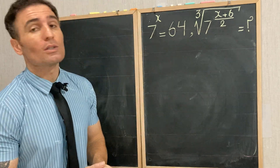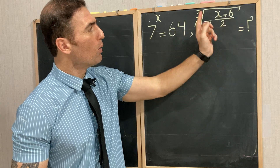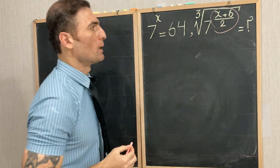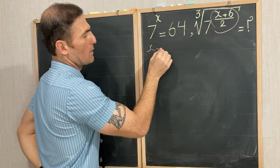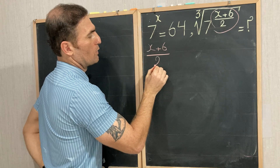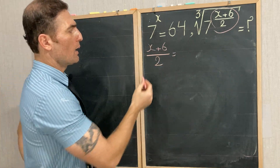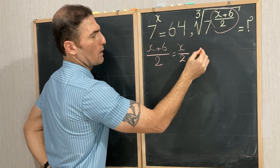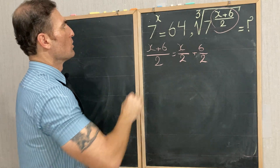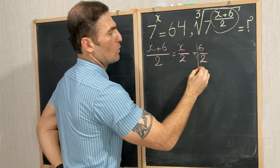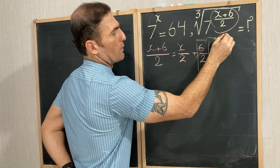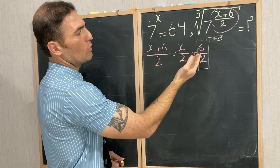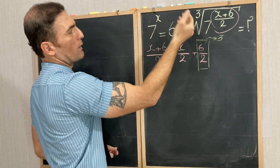I'm going to start with this exponent: x plus 6 over 2. What is x plus 6 over 2? It is the same as x over 2 plus 6 over 2. And as you know, 6 over 2 equals 3. So x plus 6 over 2 is the same as x over 2 plus 3.